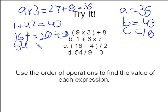54 divided by 9 minus 3. 54 divided by 9 is 6 minus 3 equals 3. So D equals 3.